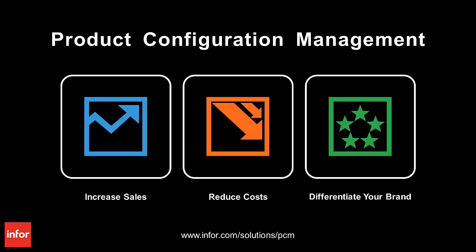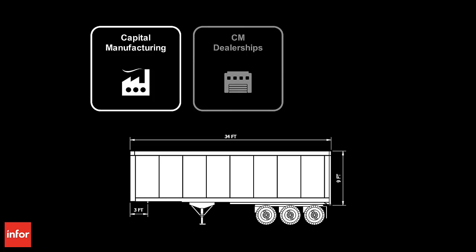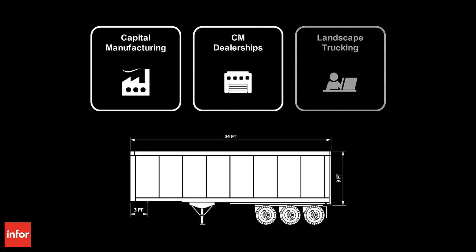Today we will see how Infor Product Configuration Management addresses tough customer challenges with a complete solution, driving real value by increasing sales, reducing cost, and differentiating your brand. In the following scenario, Capital Manufacturing is a manufacturer of semi-truck trailers, CM Dealerships is a dealer for Capital Manufacturing, and Landscape Trucking is a customer for CM Dealerships.